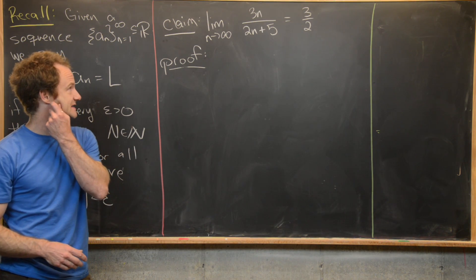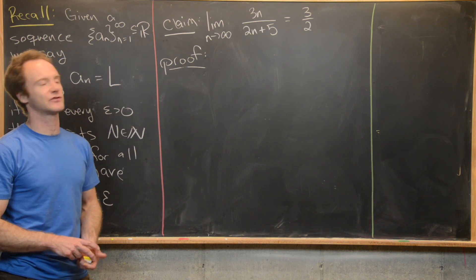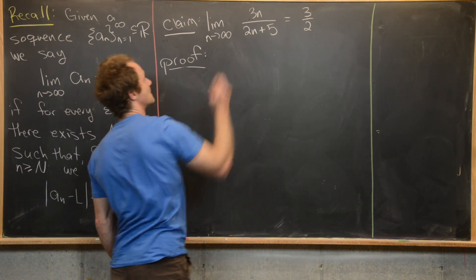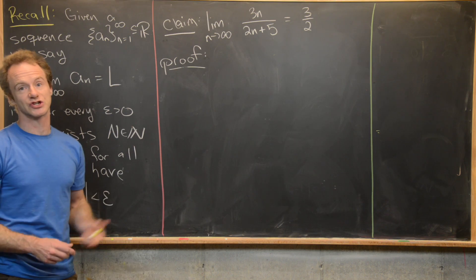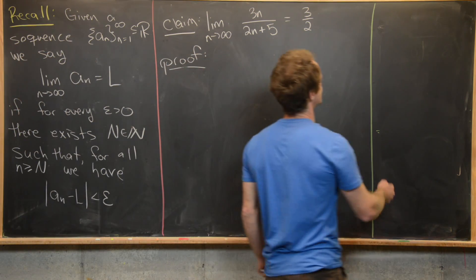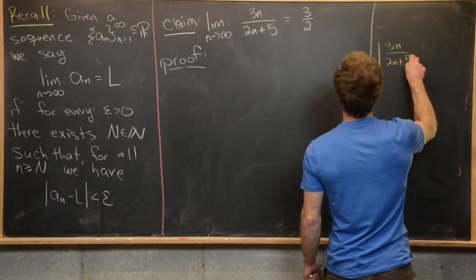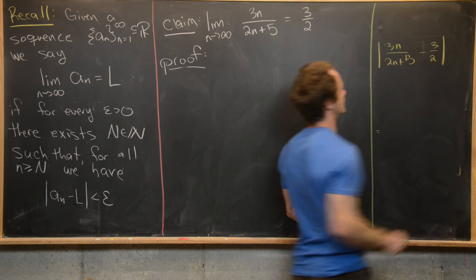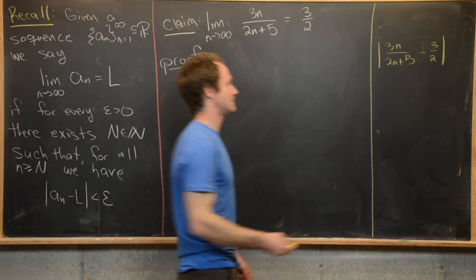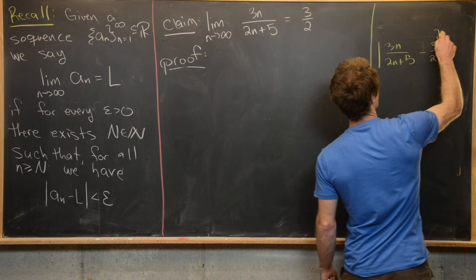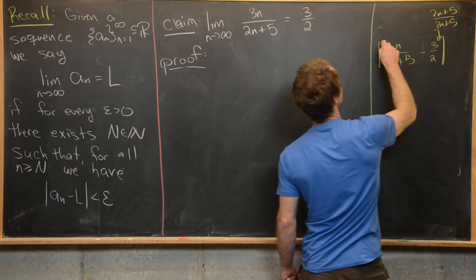For our next example, we look at the limit as n goes to infinity of 3n over 2n plus 5. From calculus, that should be 3/2, because we have a linear term in numerator and denominator and the coefficients of n are 3 and 2 respectively. We start our scratch work by looking at the absolute value of 3n over 2n plus 5 minus 3/2.